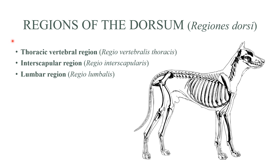As always, we will begin with the terms, so you can stop the video here if you want to write these down or just take a screenshot. We will begin with the regions of the dorsum — basically the back regions. We have just three here, so this part will be relatively simple and straightforward.